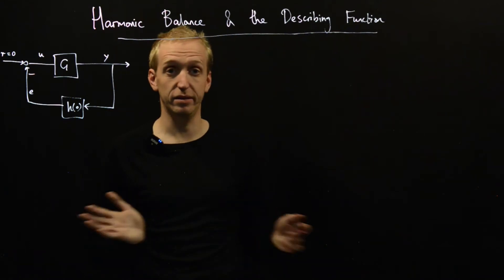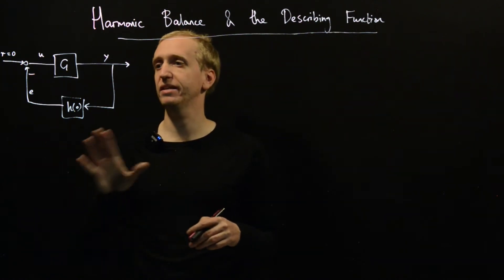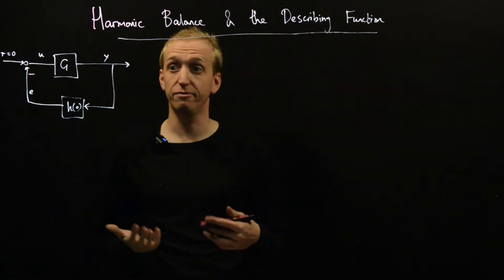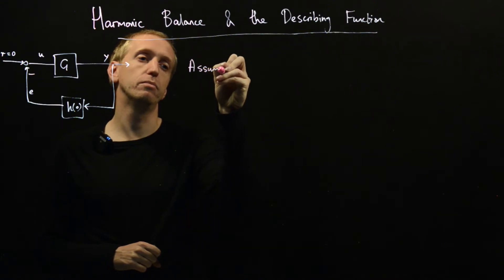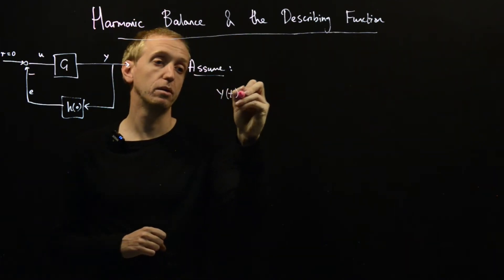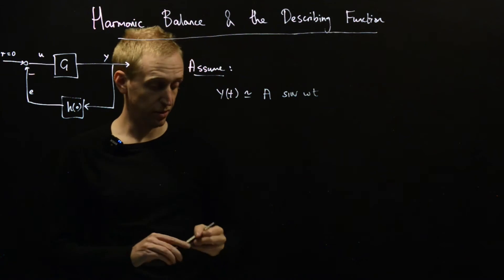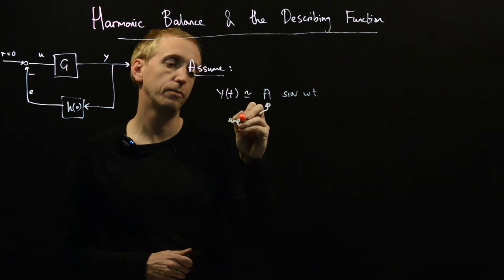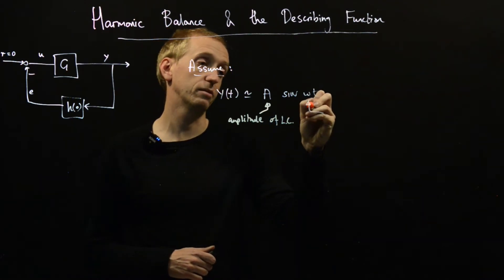How are we going to find limit cycles? The method we're going to present is quite hand-wavy in nature, but we're basically going to say: we have this feedback setup. What's the simplest way we can capture the essential features of a limit cycle? Let's just assume that this signal y is going to be roughly of the form A sin(ωt). This is a rough representation of our limit cycle, where A is the amplitude and ω is the frequency.